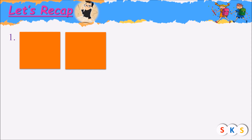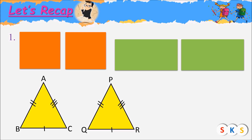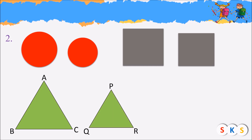Here we have two rectangles of equal size, therefore these two rectangles are congruent to each other. Here we have two triangles of equal size, therefore triangle ABC is congruent to triangle PQR. So figures having the same size are congruent to each other. Here we have two circles which are unequal in size, and two squares which are unequal in size.